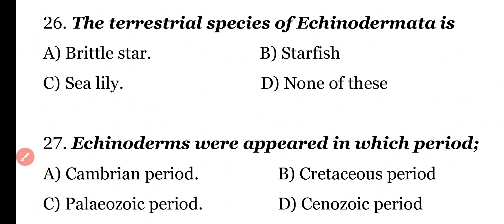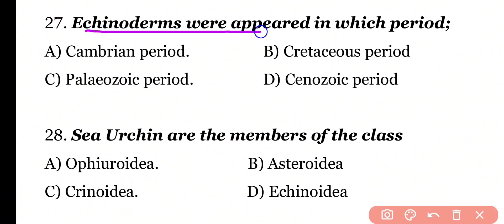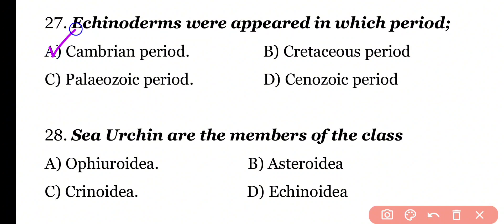Question 27: Echinoderms appeared in which period — Cambrian period, Cretaceous period, Paleozoic period, or Cenozoic period? Correct answer is Option A. In the course of evolution, Echinoderms first appeared in the Cambrian period of the Paleozoic era.